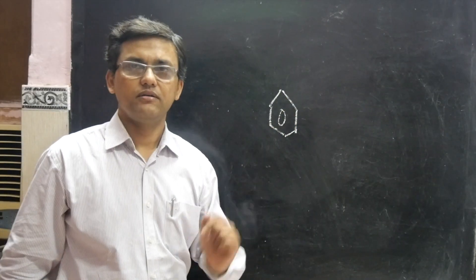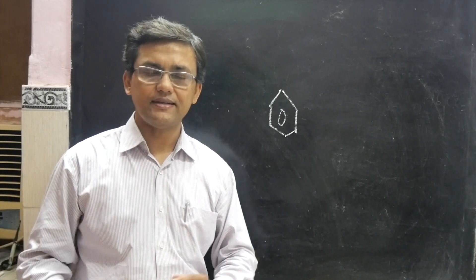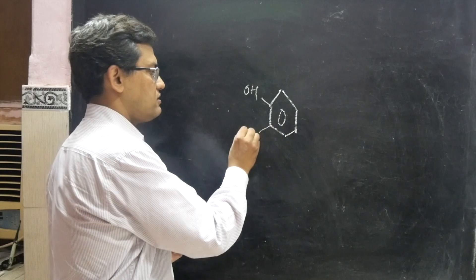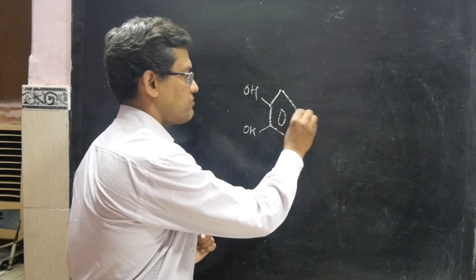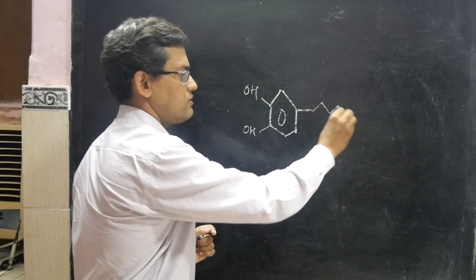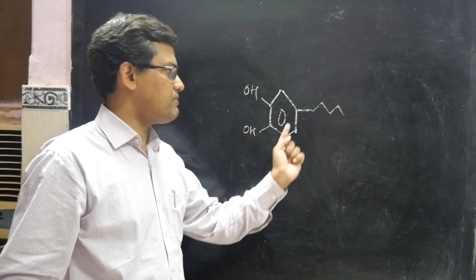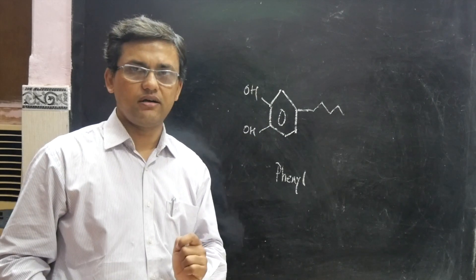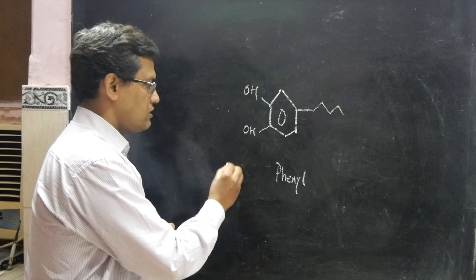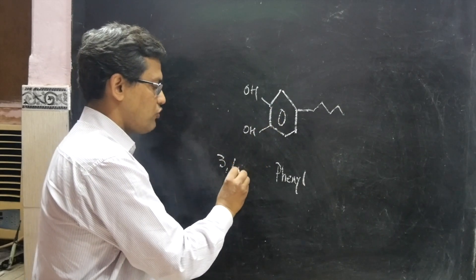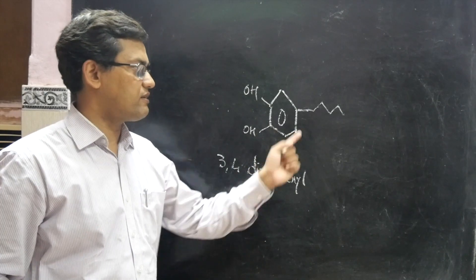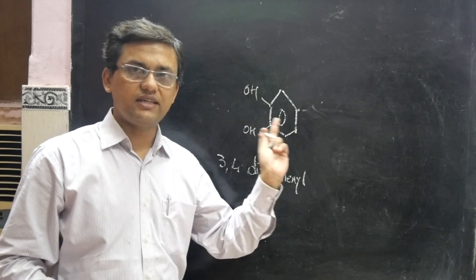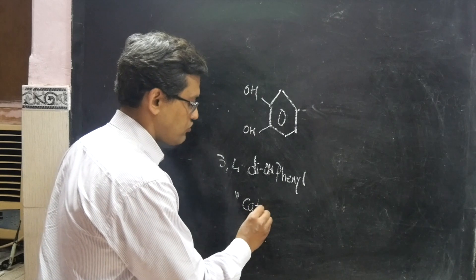This is a routine benzene ring that we know from our organic chemistry days. When this benzene ring has hydroxyl groups attached, it is known as phenyl. When hydroxyl molecules attach at positions 3 and 4, we get a 3,4-dihydroxyl phenyl ring.